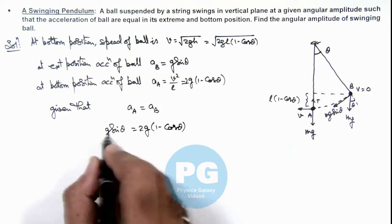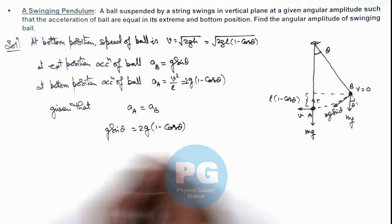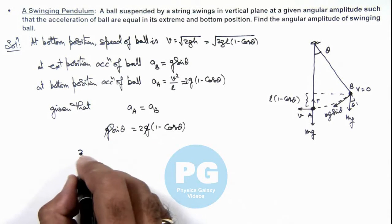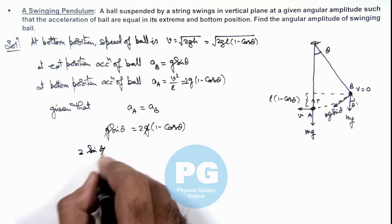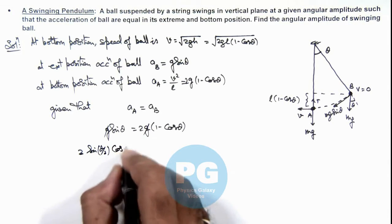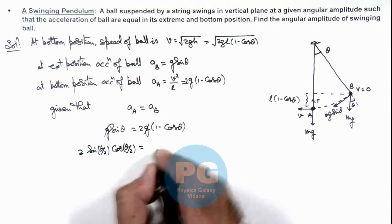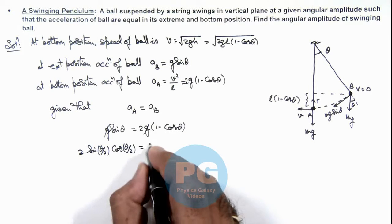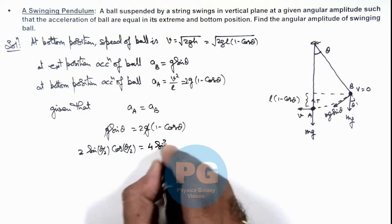And we can open these trigonometric terms in half angle form, so this is, 2g gets canceled out, this is 2 sin(θ/2) cos(θ/2) is equal to, this becomes 2 sin²(θ/2), so this is 4 sin²(θ/2).